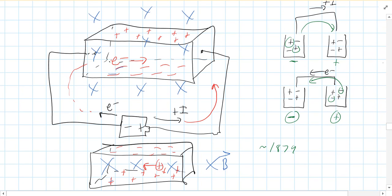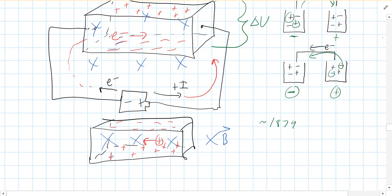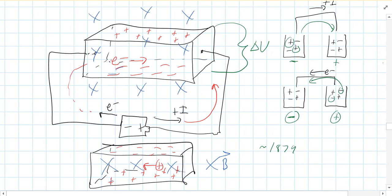So Hall basically measured the change in voltage from the top to the bottom of that rectangular solid. And by the sign of the voltage, he was able to determine that it is indeed negative charges flowing. So you can just tell by if the voltage is positive or negative going from top to bottom, if your charges that are flowing are positive or negative. So he was able to figure out that negative charges flow.